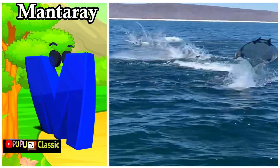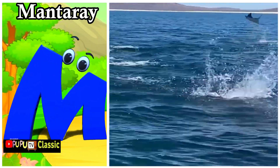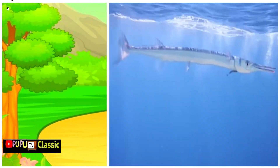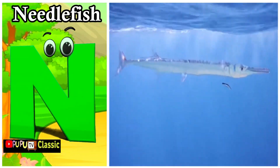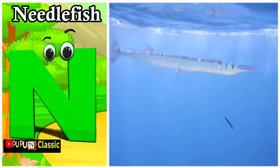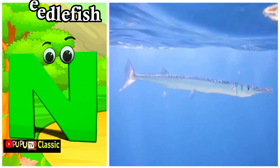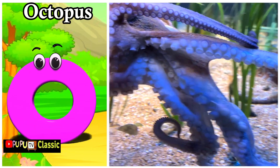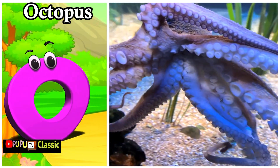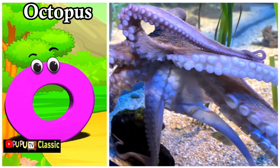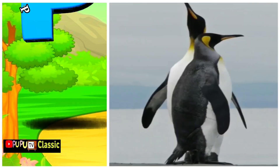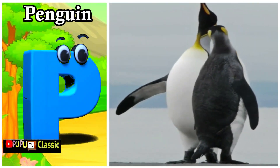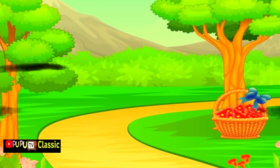M is for manta ray. Muh, manta ray. N is for needlefish. Nuh, needlefish. O is for octopus. Oh, octopus. P is for penguin. Puh, penguin.